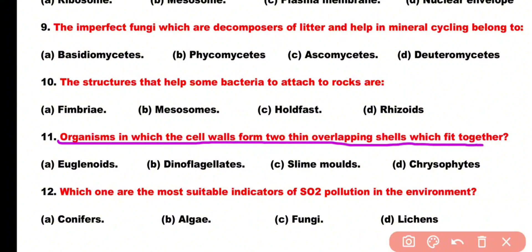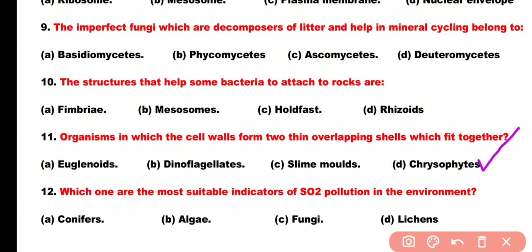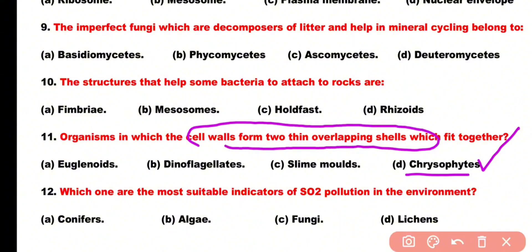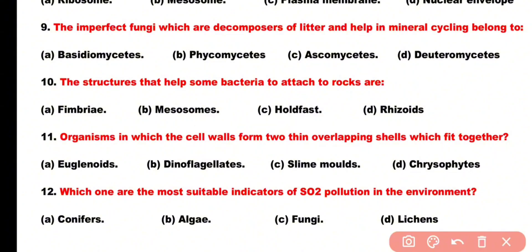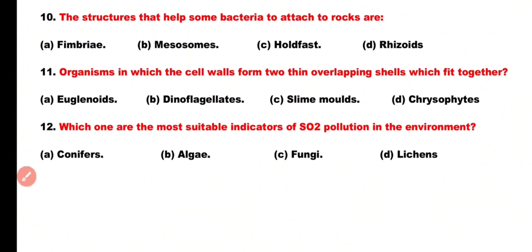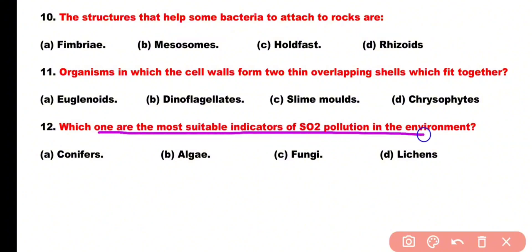Question number 11: Organisms in which cell wall forms two thin overlapping shells which fit together are: euglenoids, dinoflagellates, slime molds, or chrysophytes. Correct answer is option D. Chrysophytes include diatoms in which the cell wall forms two overlapping thin shells, giving them a soap-box-like appearance.